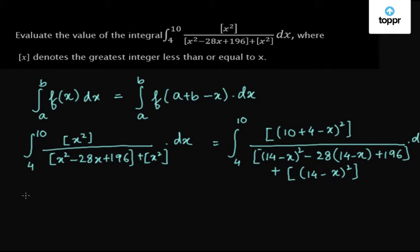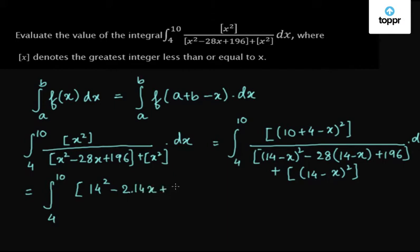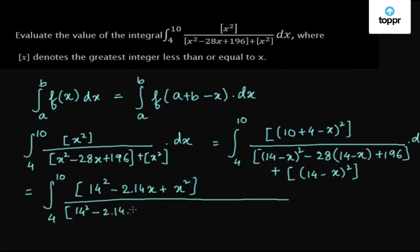We expand all the terms inside the brackets. (14 - x) squared expands to 14 squared minus 2 times 14x plus x squared, which gives us 196 minus 28x plus x squared, divided by greatest integer of 196 minus 28x plus x squared.